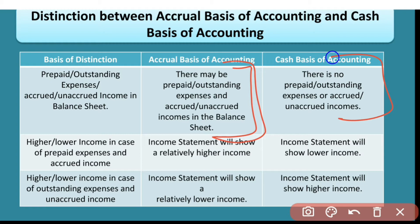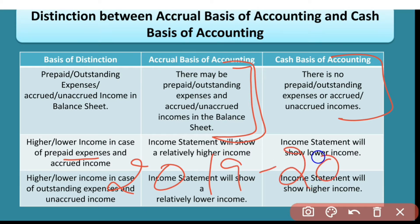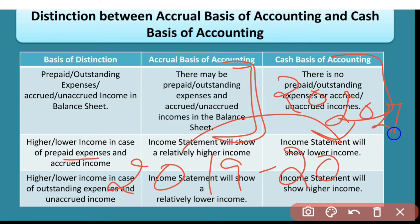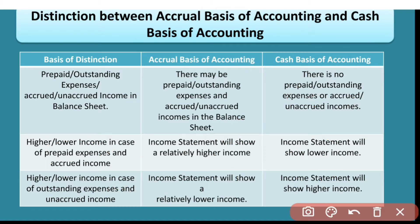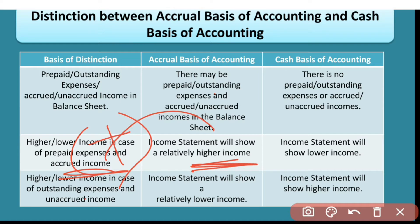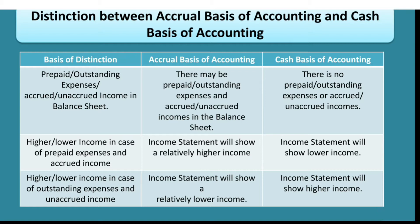In the case of prepaid expenses and accrued income, let's consider: I am preparing my accounts for 2019-20. Prepaid expenses means I have already paid expenses belonging to 2020-21, so I deduct those prepaid expenses because they are not for the current year. For accrued income, I have earned that income but not yet received it, so I add this accrued income. This results in higher income under accrual basis, whereas cash basis will show lower income.